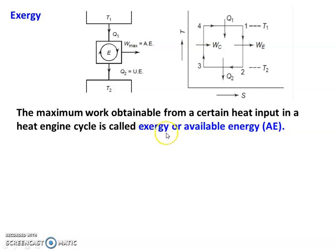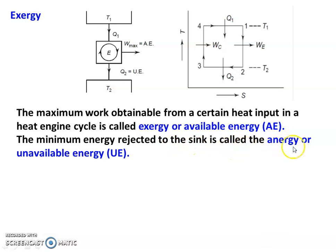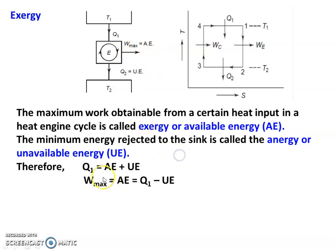Exergy, or available energy, is defined as the maximum work obtainable from a certain heat input in a heat engine cycle. The area 1-2-3-4 on the TS diagram represents what is converted into available energy. The minimum energy rejected to the sink is called unavailable energy (UE). Q1 = AE + UE, where AE is available energy and UE is unavailable energy. Therefore, maximum work equals available energy, equal to Q1 minus UE.